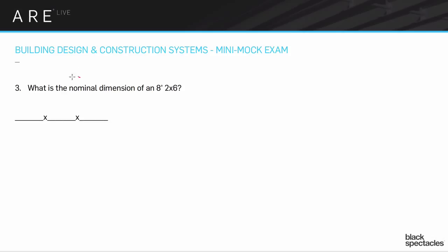So the key thing here is the nominal, what is the nominal dimension of an 8-foot 2x6? And the actual answer to that would be 8 foot and 2 and 6. That's the named thing. That's an 8-foot 2x6.